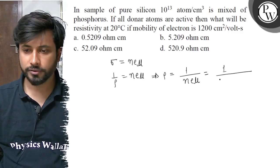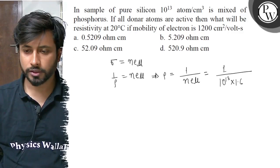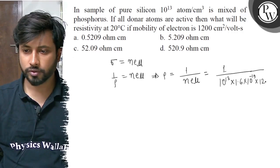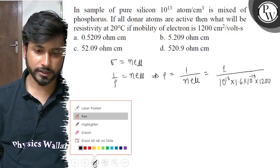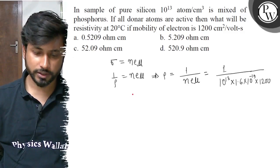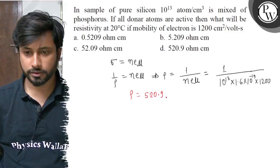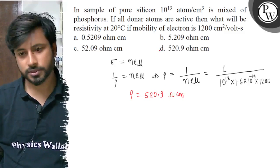n is 10^13 per centimeter cube, electronic charge 1.6 × 10^-19, mobility of electron 1200 centimeter square per volt second. If you calculate, resistivity equals 520.9 ohm centimeter. So the final answer is option D.